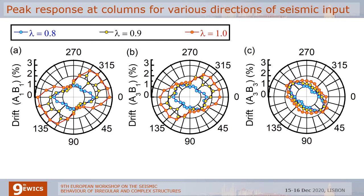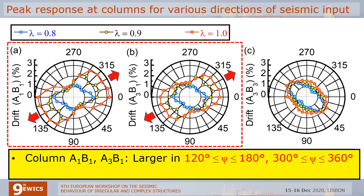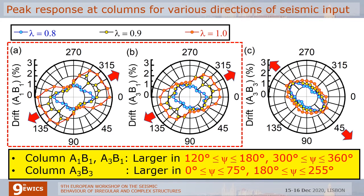I would like to discuss the effect of directivity of the seismic input on the peak local response. What I am showing to you is the peak response of the three columns. The peak response of columns A1B1 and A3B1 are larger in this direction. In contrast, the peak response of column A3B3 is larger in a different direction.